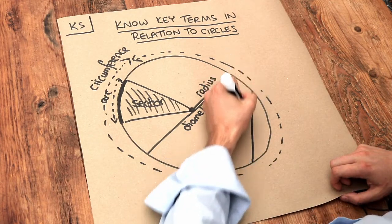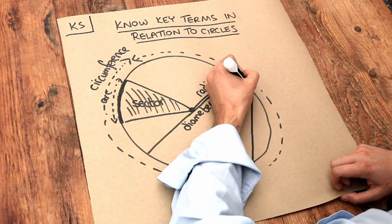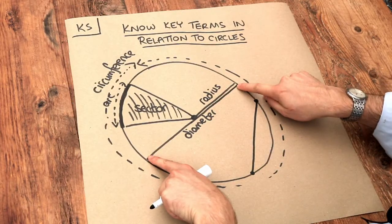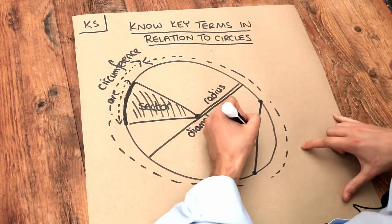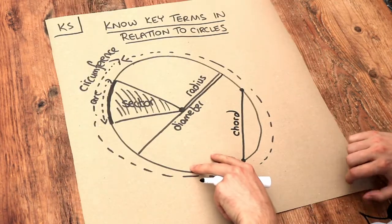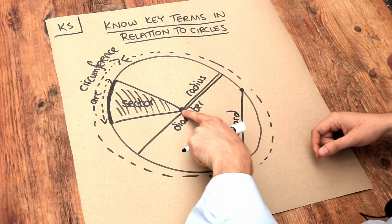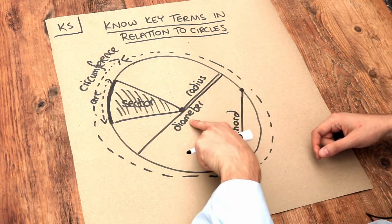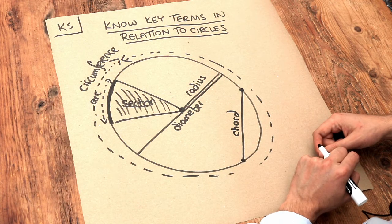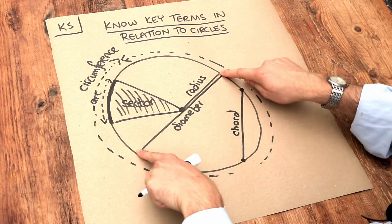And a few more terms. Let's say we have a line segment that connects two points on the circle, but they don't have to be opposite points like with the diameter. That is known as a chord of the circle. And if that chord does pass through the center of the circle, then that is known as a diameter. So a diameter is just a special case of a chord where the two points are opposite ends of the circle.